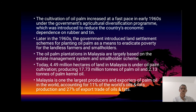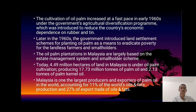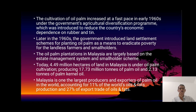Today, 4.49 million hectares of land in Malaysia is under oil palm cultivation, producing 17.78 million tons of palm oil and 2.13 million tons of palm kernel oil. Malaysia is one of the largest producers and exporters of palm oil in the world, accounting for 11% of the world's oils and fats production and 27% of exports.